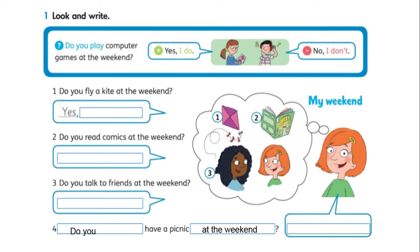Number one — look and write. Observa los ejemplos que aparecen en el recuadro. Vamos a responder las preguntas observando las imágenes: ¿qué es lo que ella hace el fin de semana? Solo debes poner sí de acuerdo a lo que ella está pensando. Do you play computer games at the weekend? Tenemos el ejemplo de respuesta positiva: 'Yes, I do.' Y la respuesta negativa: 'No, I don't.' Debes leer, observar la imagen y escribir 'Yes, I do' o 'No, I don't.'